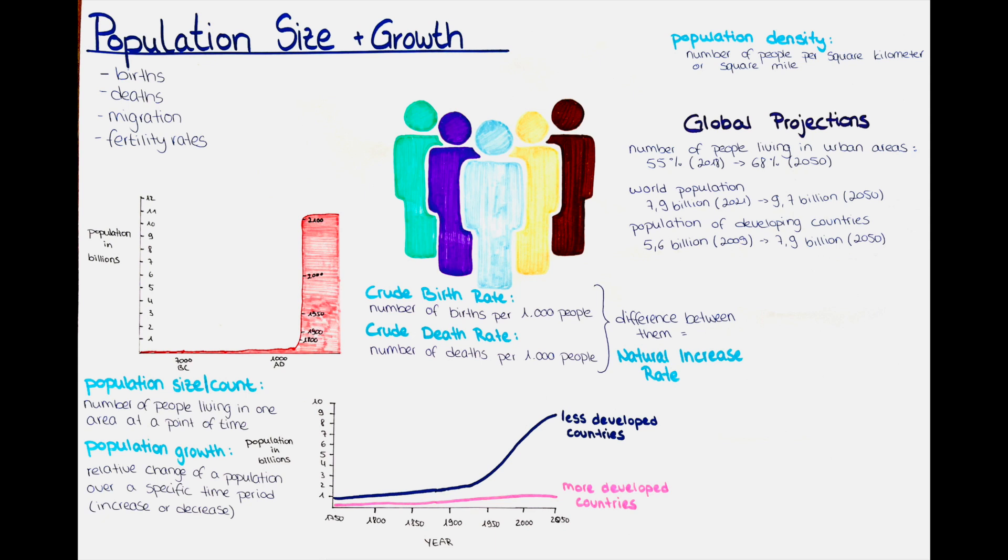Another important measure of the population is population density. Population density refers to the number of people living in a particular area per unit of land. It is usually measured in persons per square kilometer or persons per square mile. Population density is an important demographic indicator that provides information about how crowded a particular area is and how the population is distributed in that area.